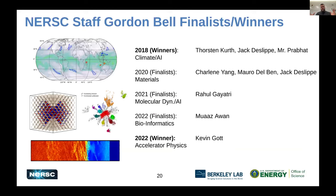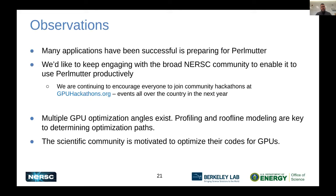We've been working with teams to do large-scale science runs on Perlmutter and related GPU systems over the last several years. One outcome is large-scale, state-of-the-art science calculations recognized each year at the Supercomputing conference as Gordon Bell prize finalists, and in some cases winners. Many applications have been successful in preparing for Perlmutter, and we'd really like to keep engaging with the community to enable productive use of the system. We encourage everyone to join the GPU hackathons at gpuhackathons.org.